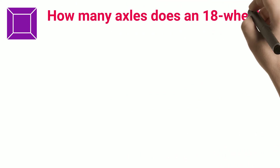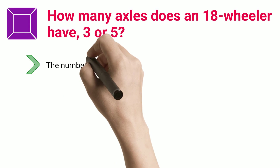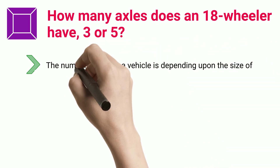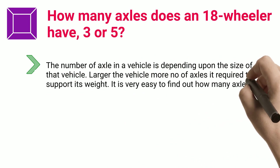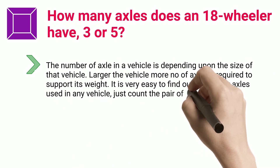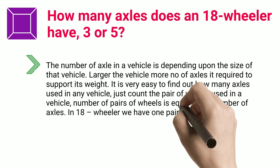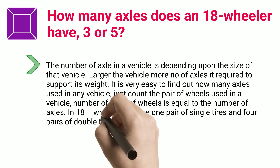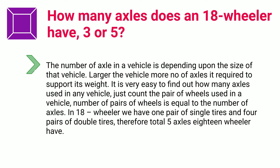FAQ: How many axles does an 18-wheeler have — 3 or 5? The number of axles in a vehicle depends upon the size of that vehicle; the larger the vehicle, the more axles it requires to support its weight. It is easy to find out how many axles are used in any vehicle — just count the pairs of wheels, as the number of pairs of wheels equals the number of axles. In an 18-wheeler, there is one pair of single tires and four pairs of double tires, therefore an 18-wheeler has a total of 5 axles.